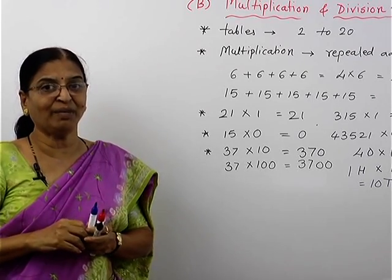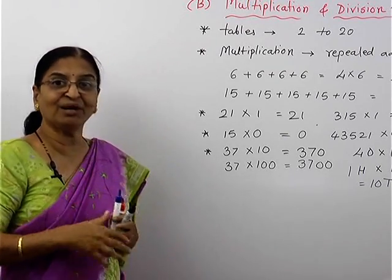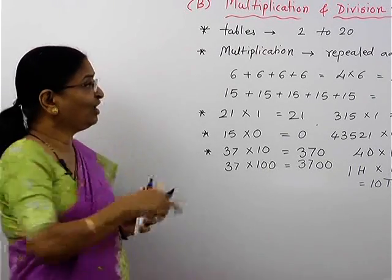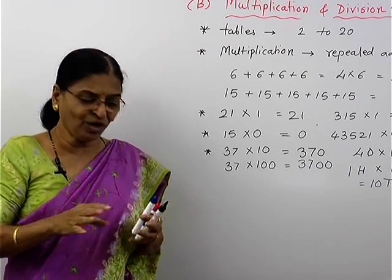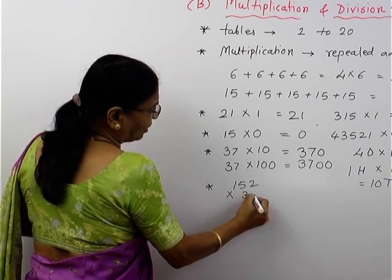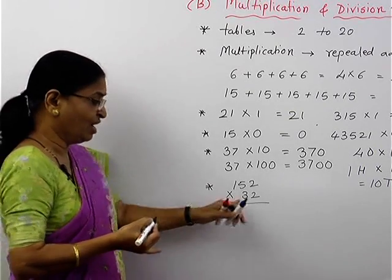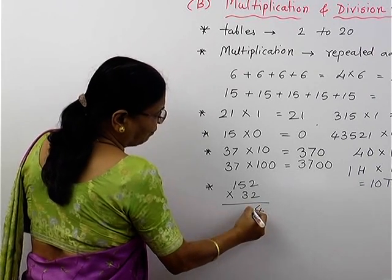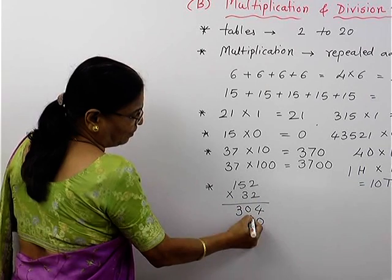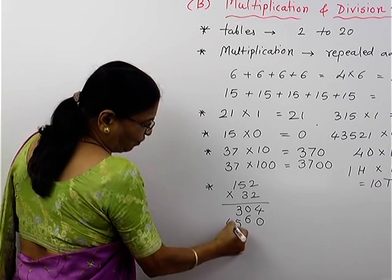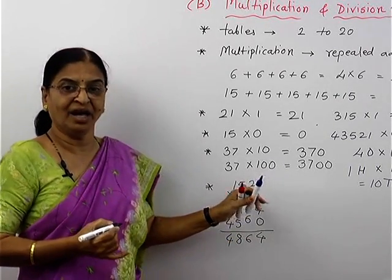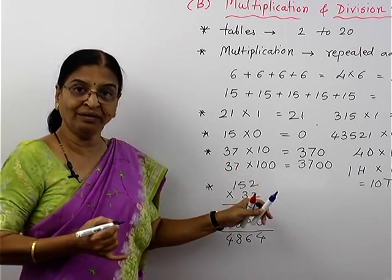We can also do multiplication of double digit and 3-digit numbers. A single digit is given — no problem, multiplication is very easy. For double digit, if you know the table, you can multiply very easily. But if you don't know the table, then suppose I want to multiply 152 by 32. First I will multiply by 2: 2 twos are 4, 5 twos are 10, carry 1, giving 304. Then, keeping one zero in the unit's place, I multiply by 3 to get 456. Adding together, I get 4,864. This is the method to multiply with a 2-digit number.